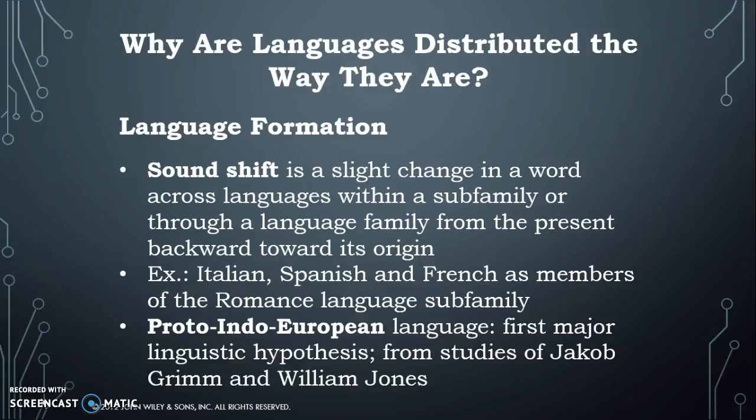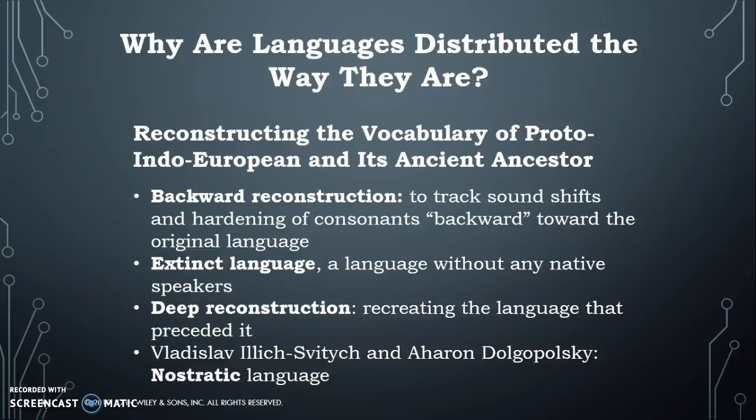Indo-European languages are the most widely spoken language family in the world. There's a hypothesis from Jakob Grimm and William Jones that looks at Proto-Indo-European, the parent of Indo-European. They traced sound shifts and words across time to figure out what this language actually sounded like before it spread across Europe and took on the forms we know today. This process of working backwards is called backward reconstruction — they track sound shifts and the hardening of consonants to move back toward that original language, which is now extinct, meaning it has no native speakers.